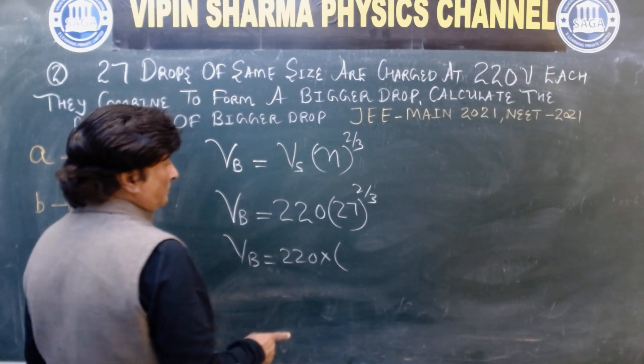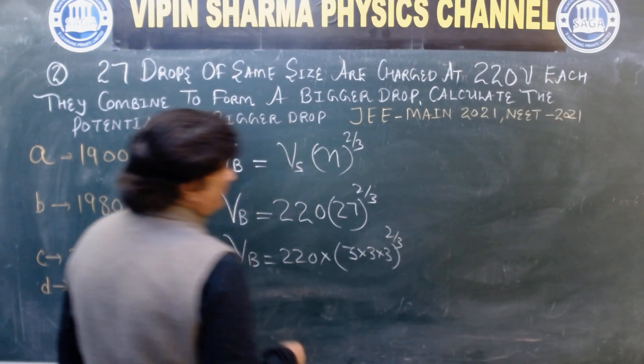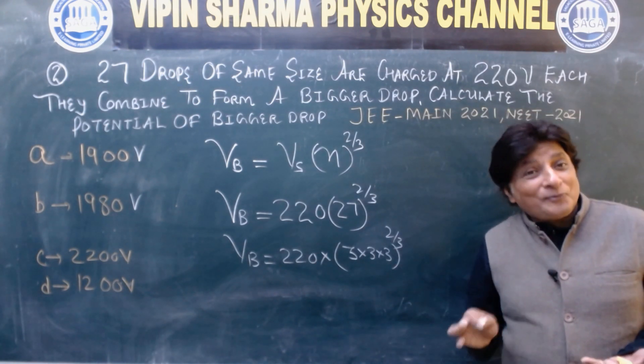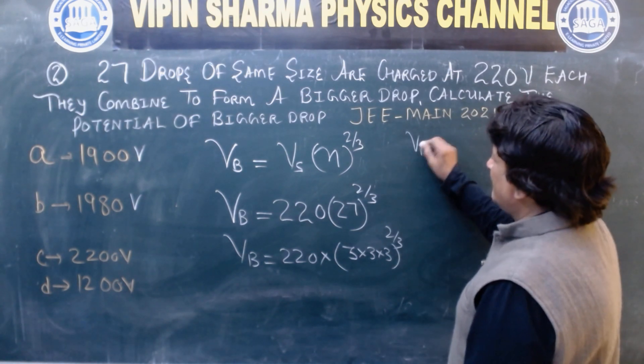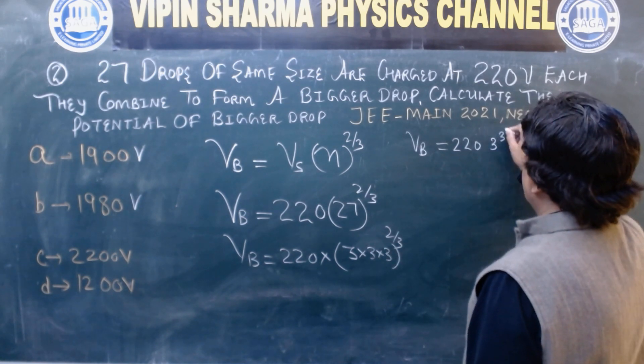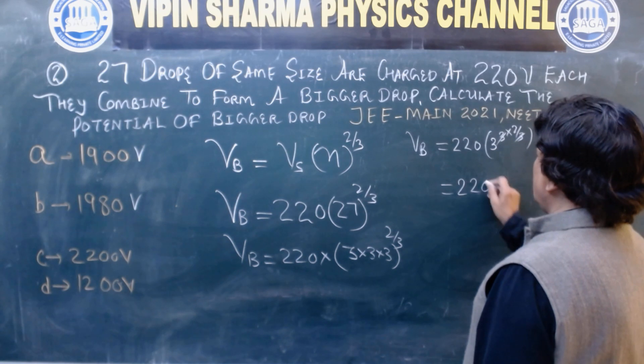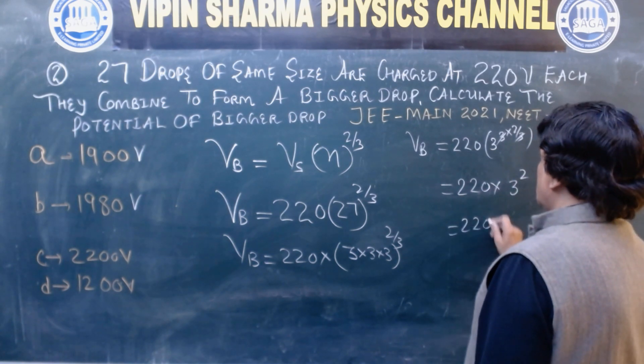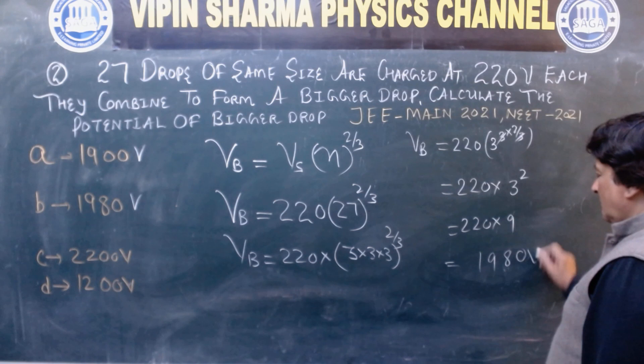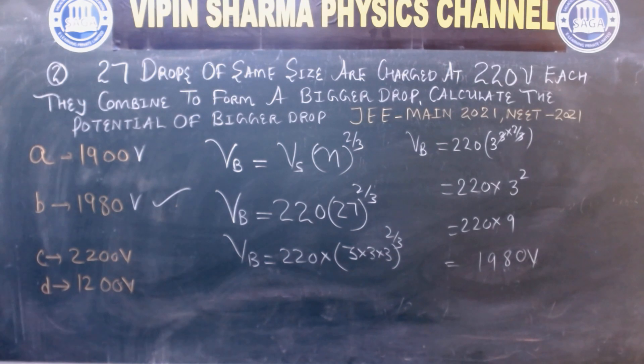See students, 3 into 3 into 3, that's 3 to power 3, raise to power 2 by 3. In exams this workout becomes tough, but with practice it's nothing. So 220 times 27 raised to 2 by 3. This is 3 to power 3 raised to 2 by 3. This gets cancelled. So 220 times 3 squared, 220 into 9, so 1980 volt. So B is the right answer.